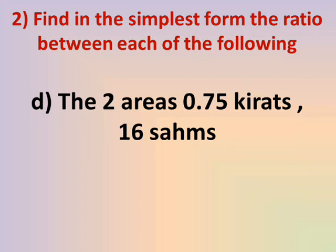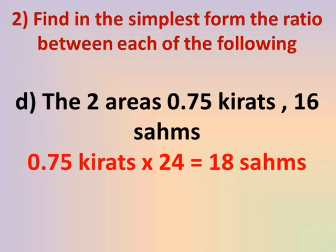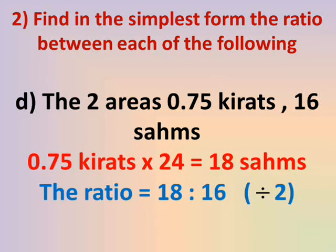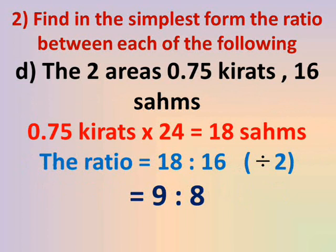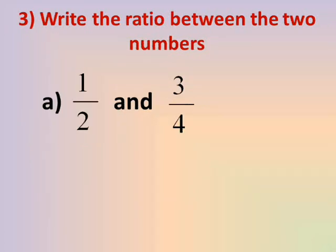Number D: 0.75 kirats and 16 sahms. The larger unit is kirats, so we convert from kirats to sahms. 0.75 × 24 = 18 sahms, since 1 kirat = 24 sahms. The ratio is 18 sahms to 16 sahms. Both 18 and 16 are divisible by 2: 18 ÷ 2 = 9 and 16 ÷ 2 = 8, giving ratio 9 to 8.